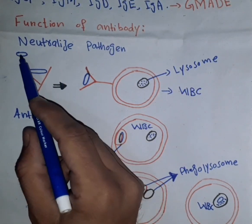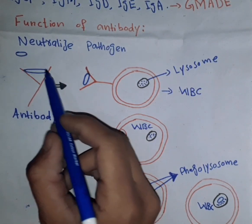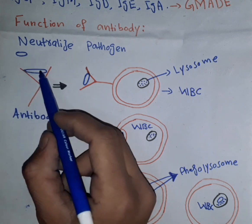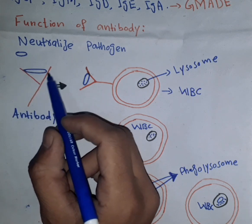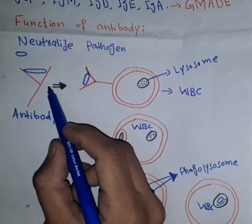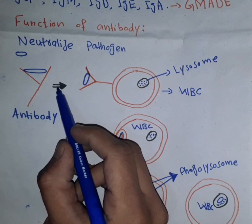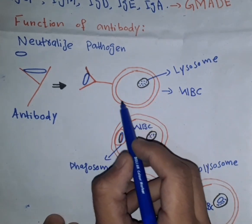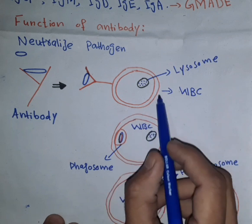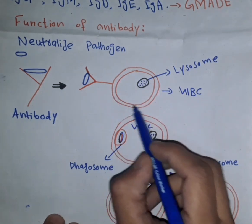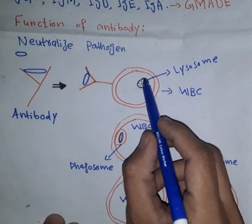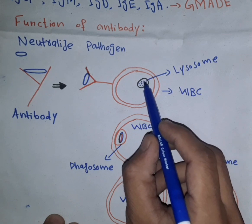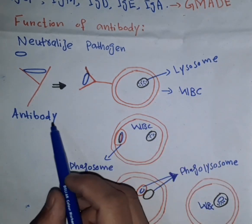Suppose one of them is a pathogen and one of them is an antibody. First of all, the pathogen is attached with the help of bonds, and then the antibody is attached to the pathogen. The white blood cell then begins to move toward the pathogen, and the white blood cell contains a lysosome — the dark dots are called the lysosome, which contains enzymes.